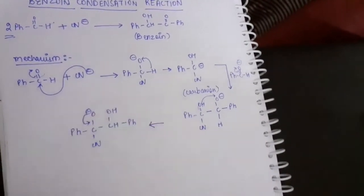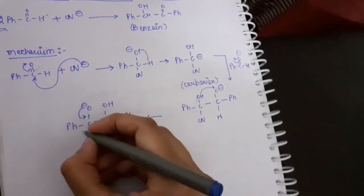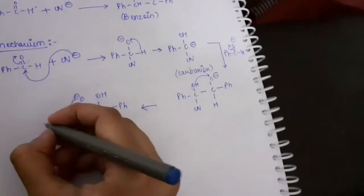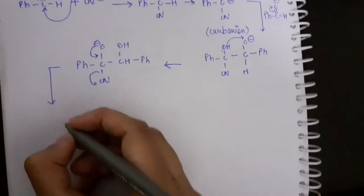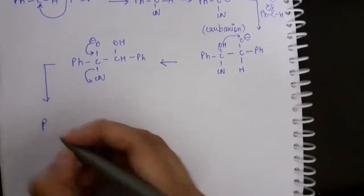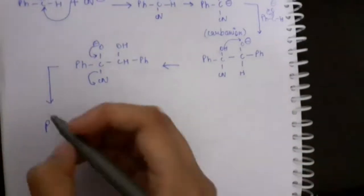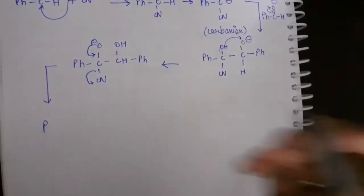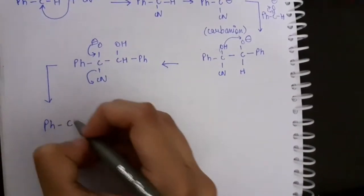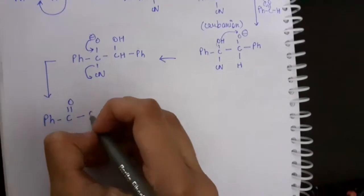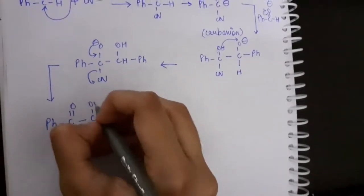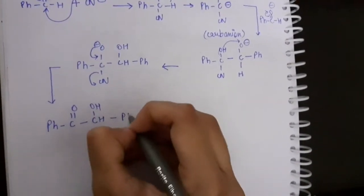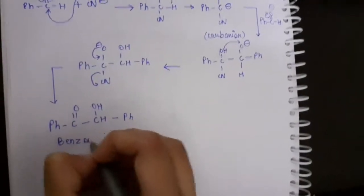This negative charge transfers the density here to form a double bond and as a result the cyanide goes off. What do we get is the remaining thing - Ph-C double bond O, CH-OH-Ph. And this is our benzoin.